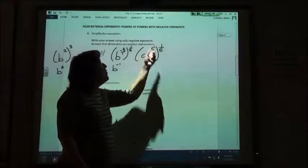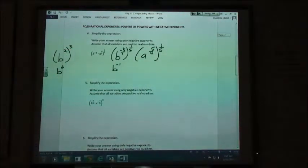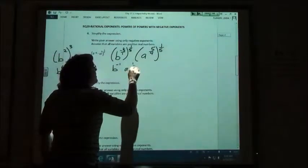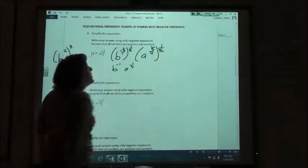How about if I have a to the five-fourths raised to the one-fifth power? What am I going to get there? One-fourth. A to the one-fourth power. Because again, on this one, the fives cancel out.